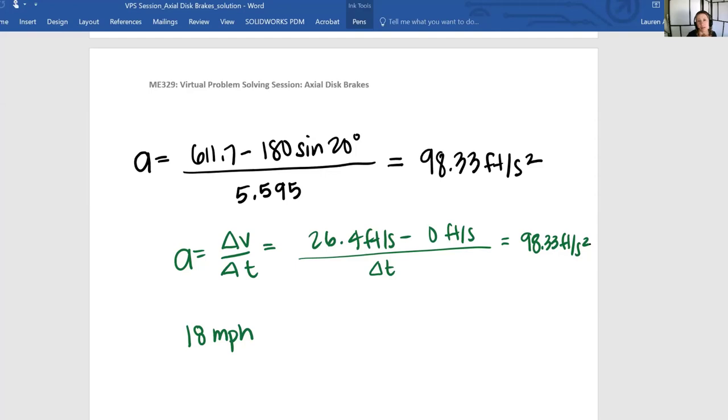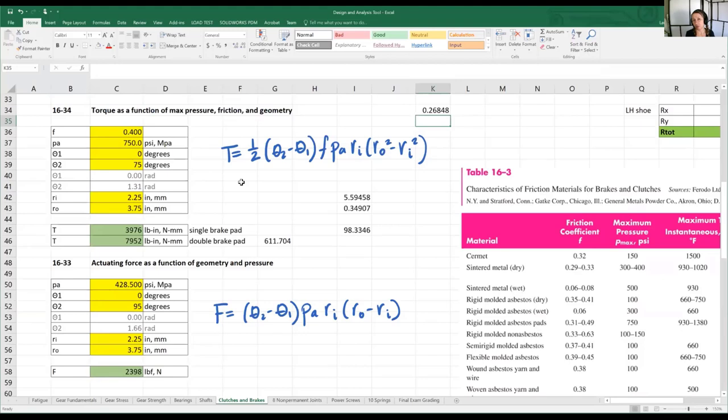Technically acceleration would be negative because she's decelerating, but we're just trying to find the magnitude. Our Δt = 26.4 feet per second / 98.33 feet per second squared. The feet cancel, one second cancels, and the last second hops back on top. Hypothetically she could stop in 0.268 seconds, which is pretty fast.